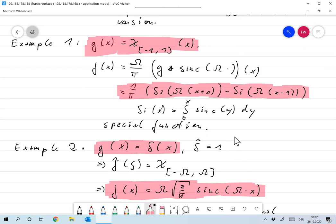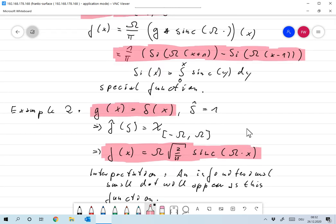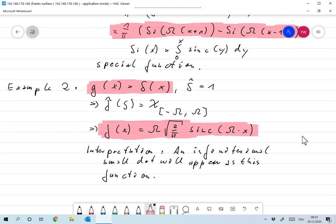And the other, even more important example is: let's take g as the delta distribution. Now if we do that, then the Fourier transform of the delta distribution is one. So our band-limited approximation to g has a Fourier transform that's one on the interval from minus omega to omega. So f is basically just the inverse Fourier transform of that, and we already computed that—that's omega times sinc, and so on. You see it over here.